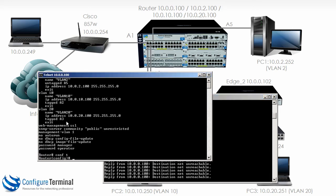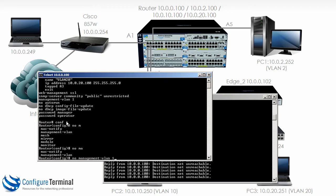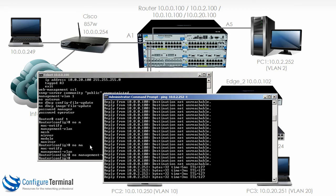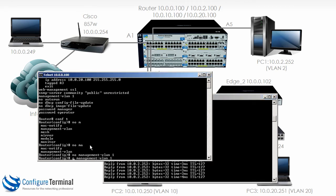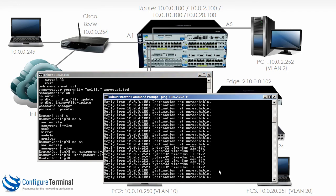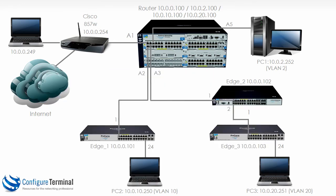But if I now type 'no management VLAN 1', notice the ping succeeds immediately. If I put that back again, notice the ping fails. The switches are creating hidden access lists blocking traffic from other VLANs to that VLAN.